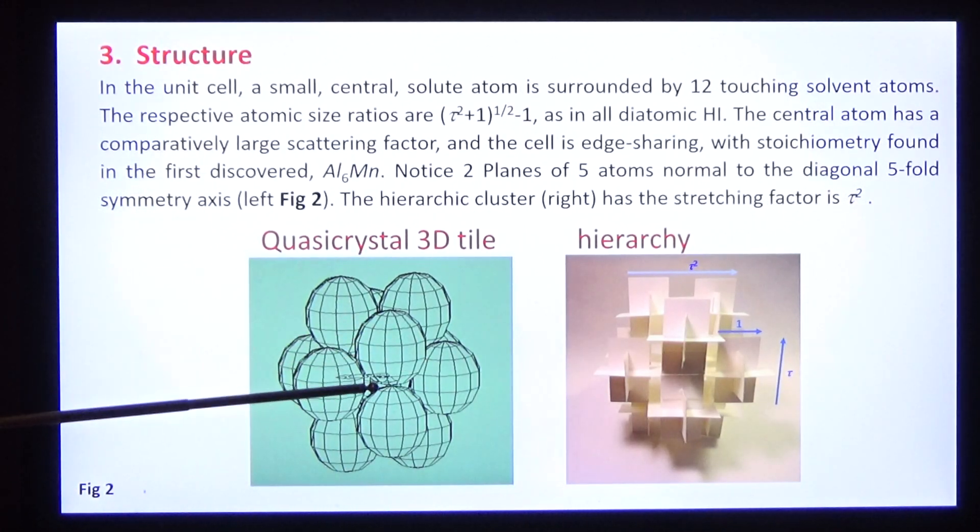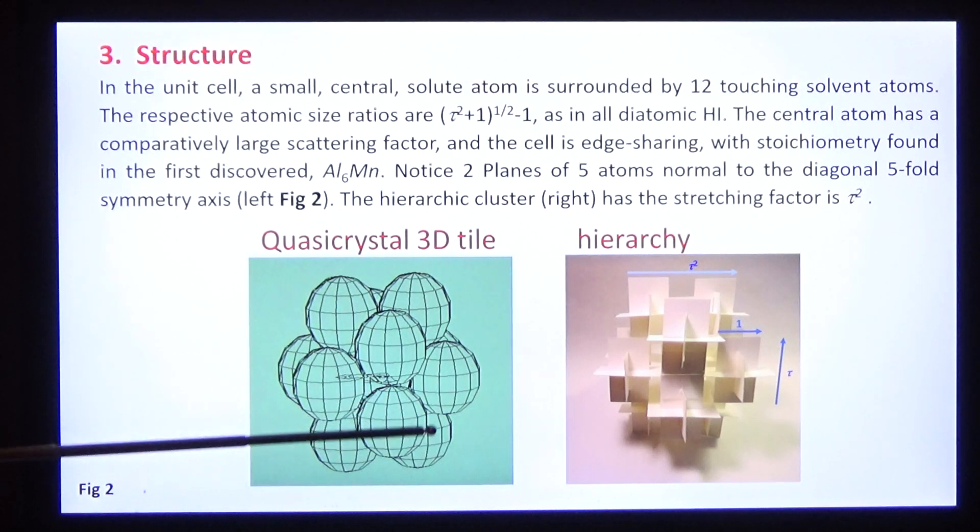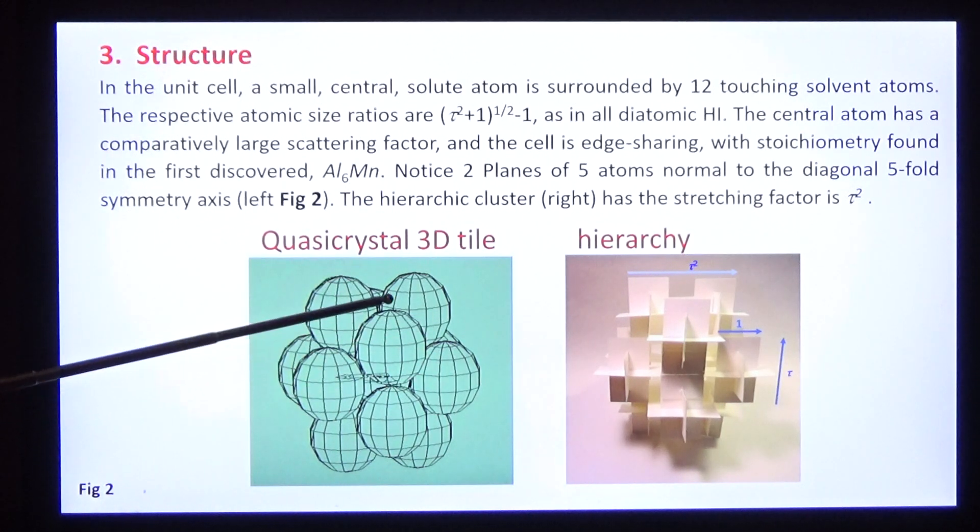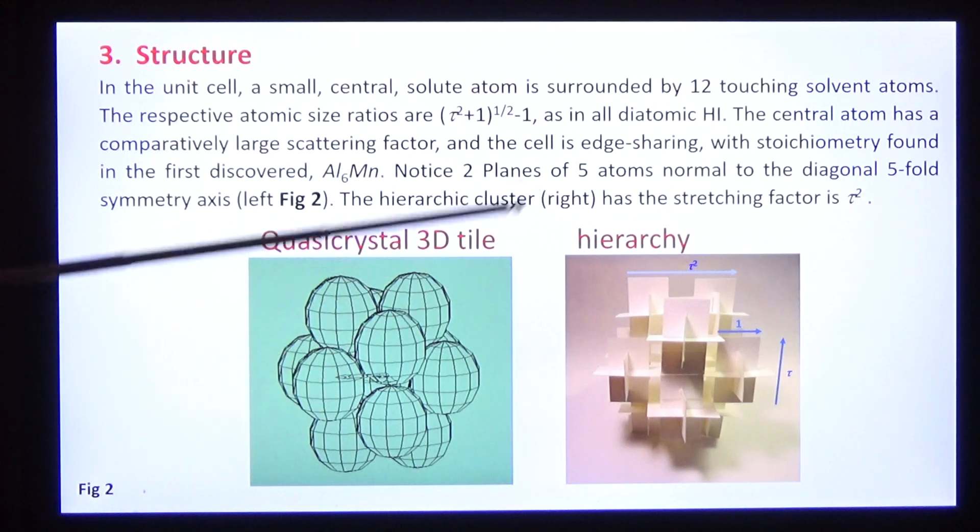Manganese is at the center, a small atom with strong scattering factor, surrounded by 12 aluminum atoms, edge sharing, so this stoichiometry is aluminum 6 manganese. Notice this feature in the structure: normal to the five-fold axis are five atoms on a plane, two planes of five atoms.